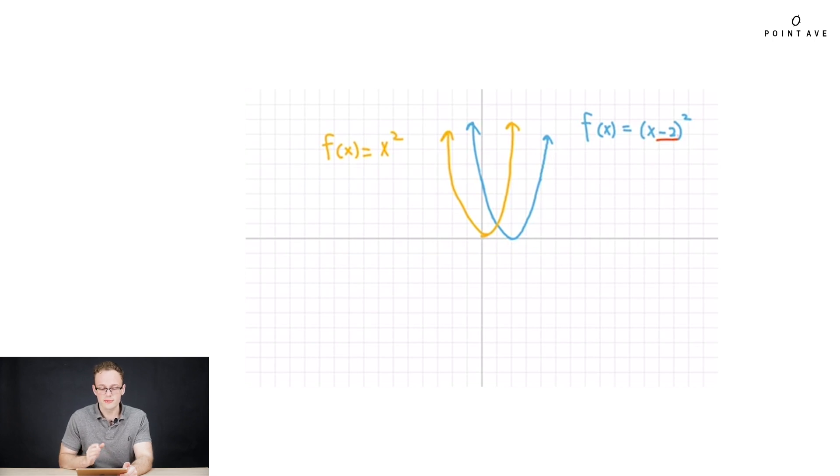So here we compare f of x equals x squared with our shifted f of x equals x minus 2 squared. And let's follow one point. The origin in the original, 0, 0, now becomes 2, 0 in the shifted function. So for that to be true, the new function has to satisfy, as we see here, f of 2 equals 0.